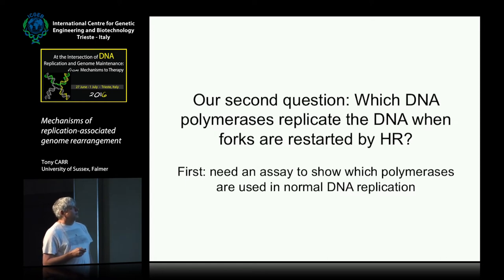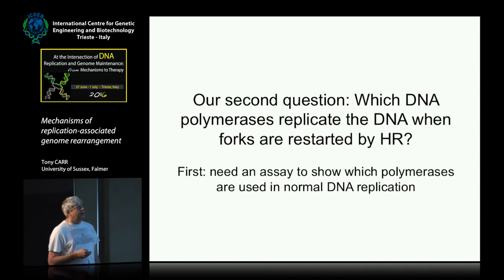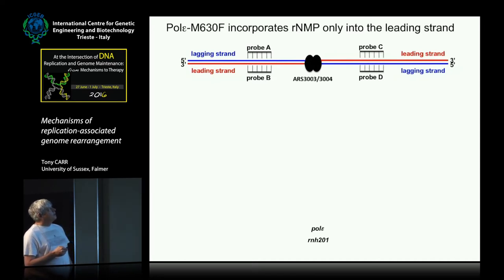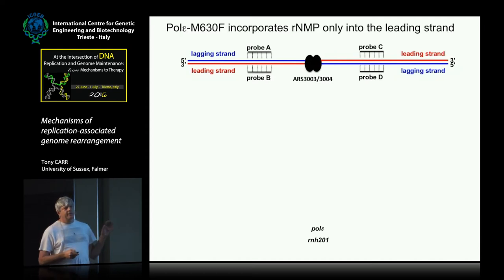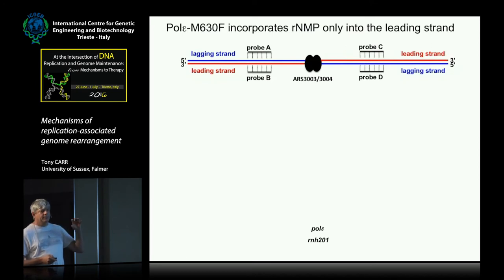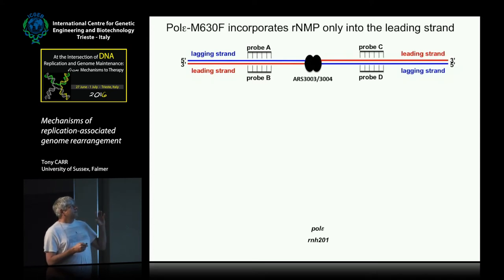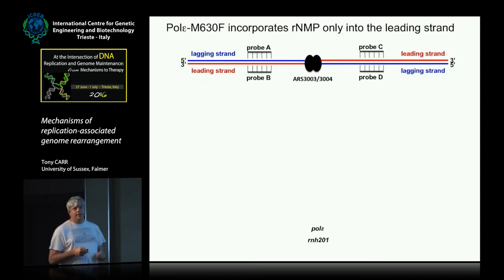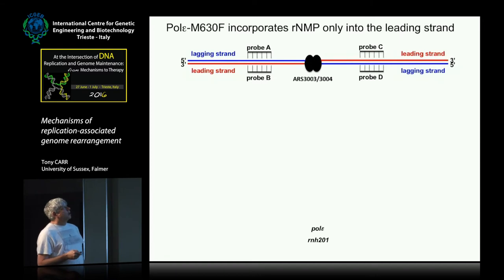The second question was: which DNA polymerases are actually replicating the DNA when forks are restarted by homologous recombination? To do this we first needed an assay to identify which polymerases were used. After conversations with Tom Kunkel, we ended up using a polymerase mutation — in this case in polymerase epsilon — where there's a mutation in the steric gate of the polymerase active site. The steric gate discriminates dNTPs from ribonucleotides, so with a slight change, the polymerase incorporates about tenfold more ribonucleotides than wild-type.